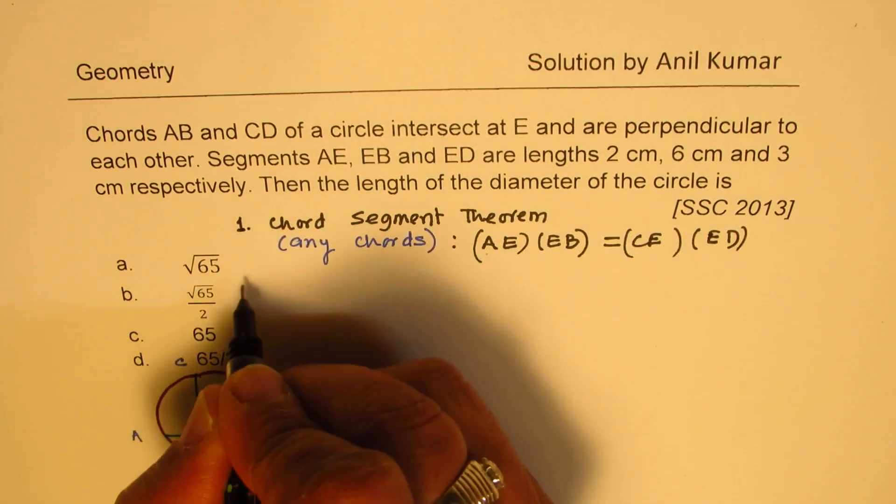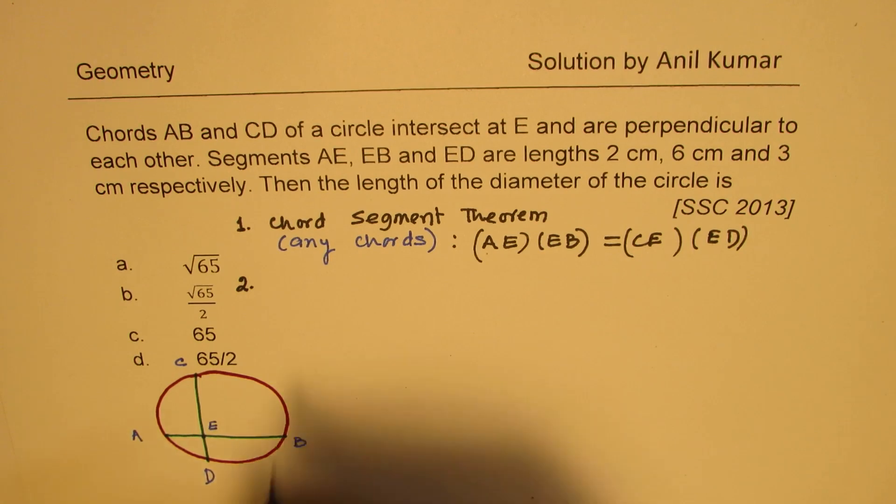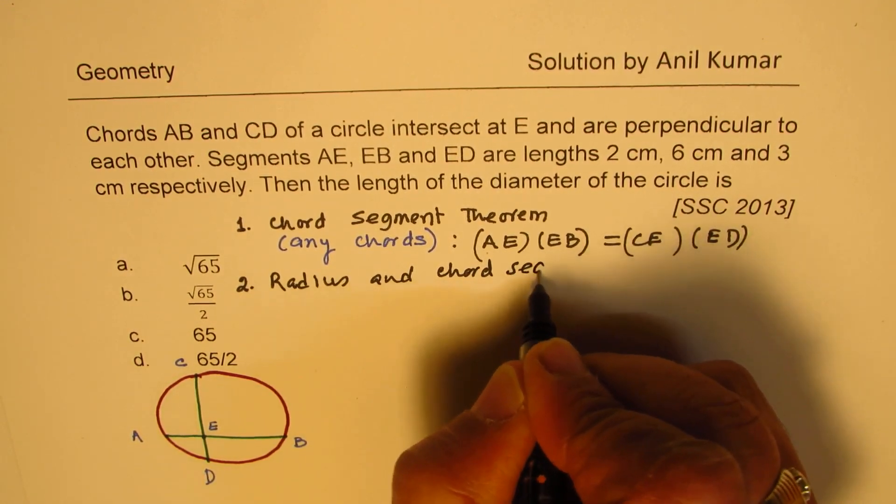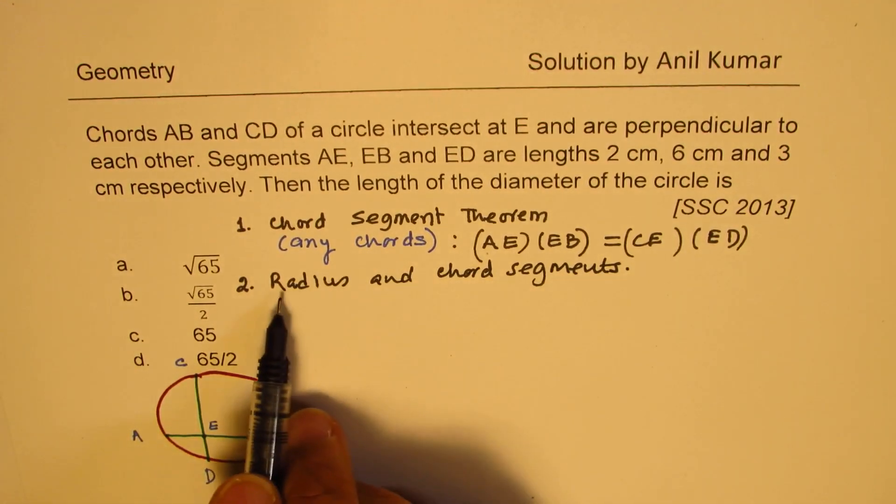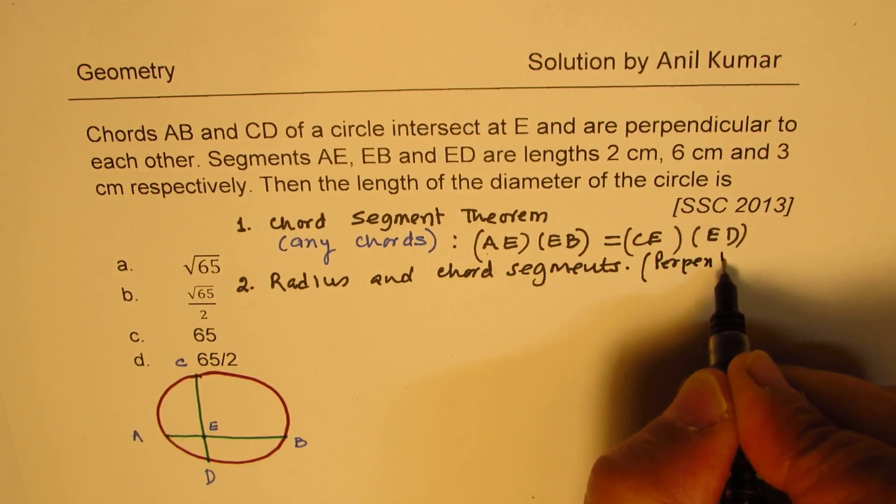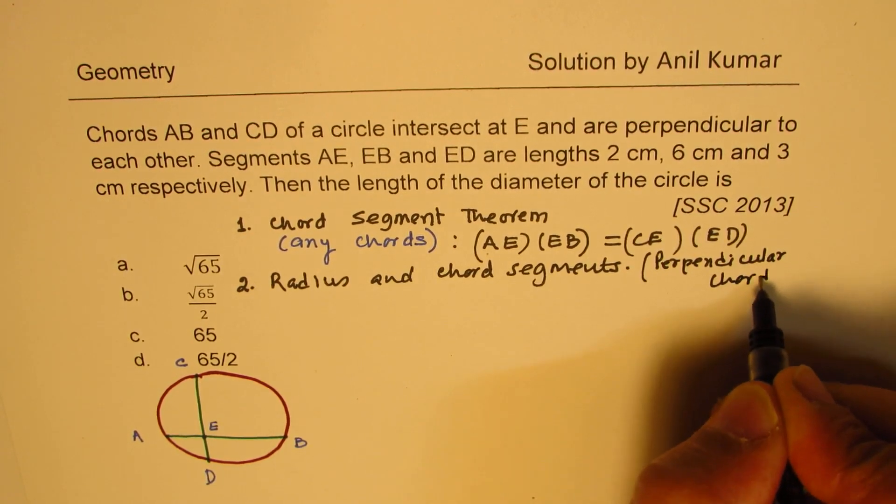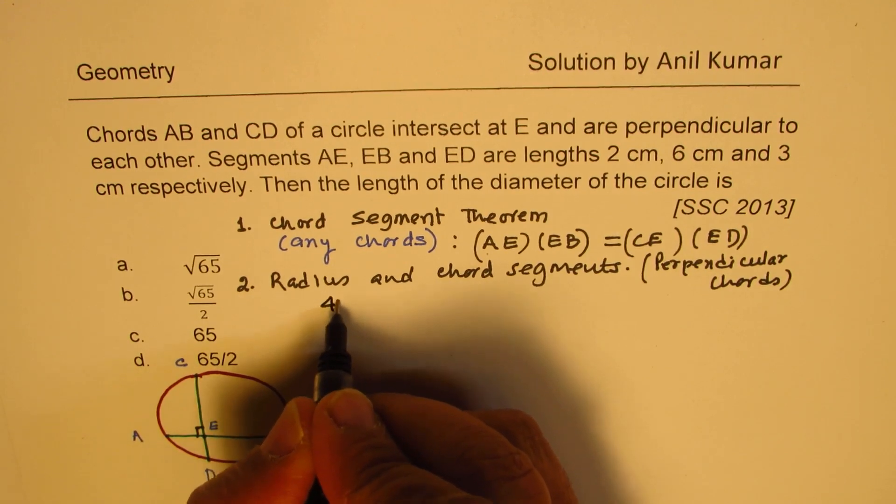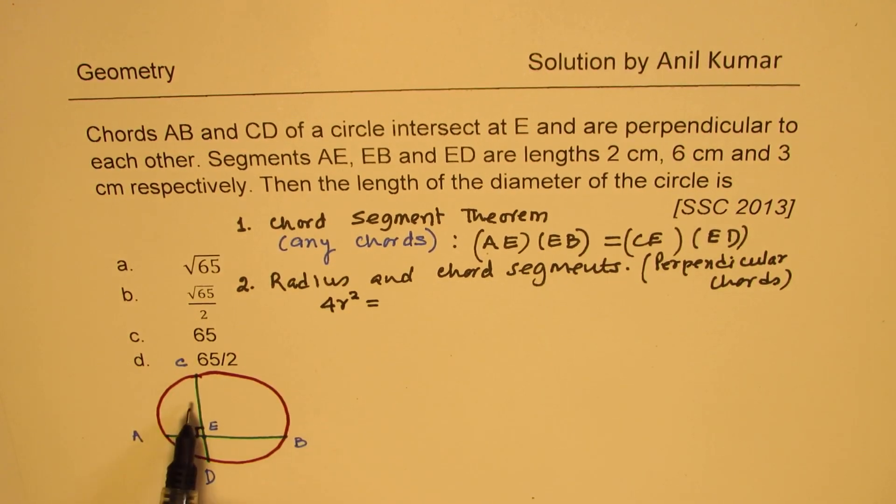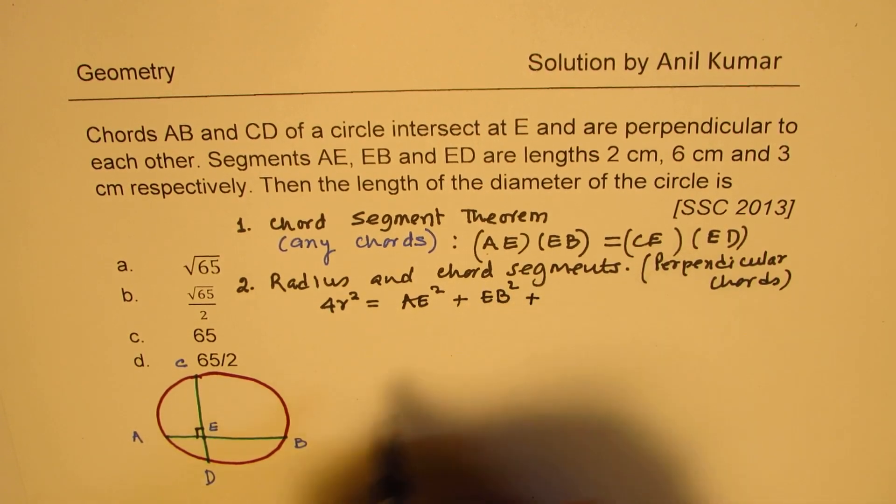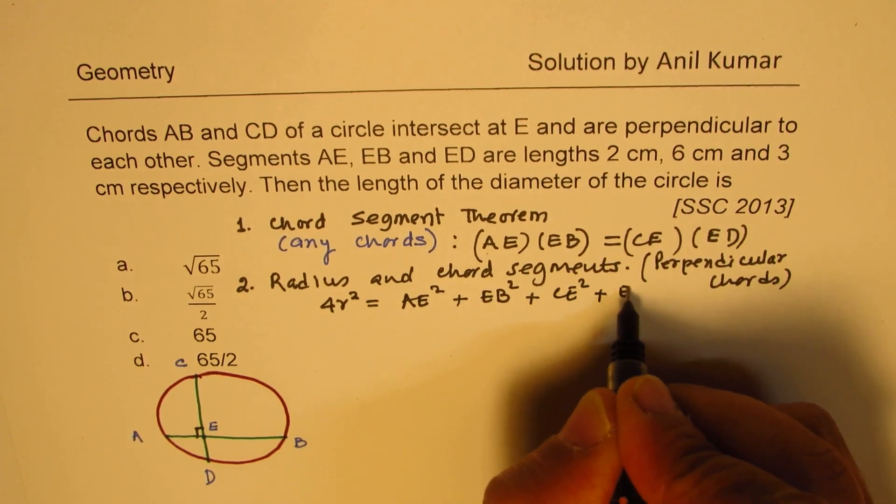Second thing which you should know is the relation between radius and chord segments. Now that relation between radius and chord segments only is valid for perpendicular chords. As is given in this particular example. So this relation which I'll provide you with the formula is only valid for perpendicular chords. And it is that four times the radius square will be equal to sum of the squares of each segment. That is to say AE square plus EB square, CE square plus ED square.